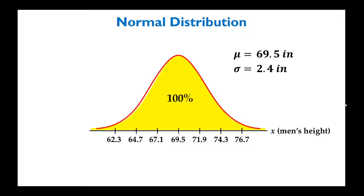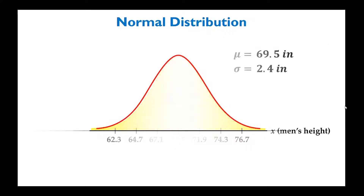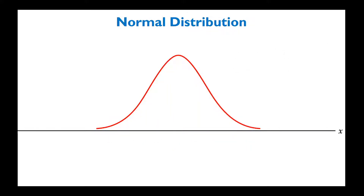The area under the entire curve represents 100% of men's heights. Theoretically, the curve extends all the way to negative infinity and positive infinity, even though we know it's not possible to have extremely extreme heights in reality.